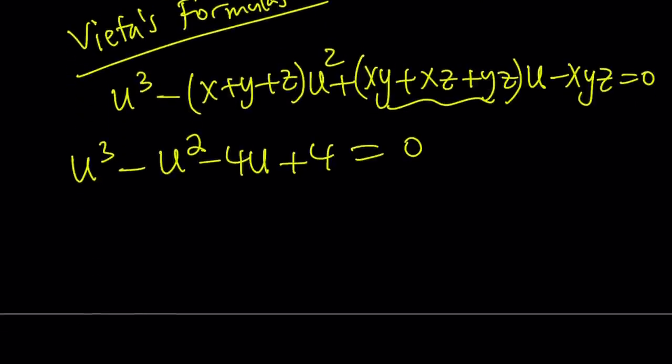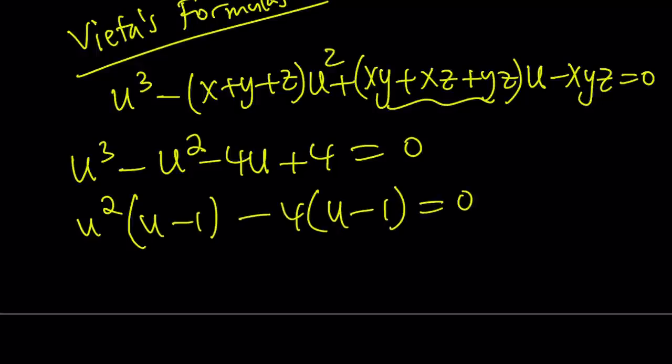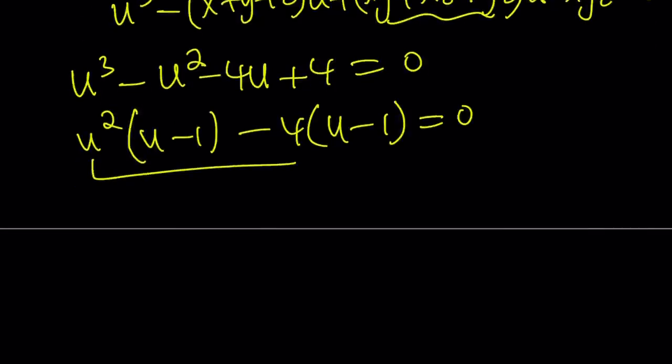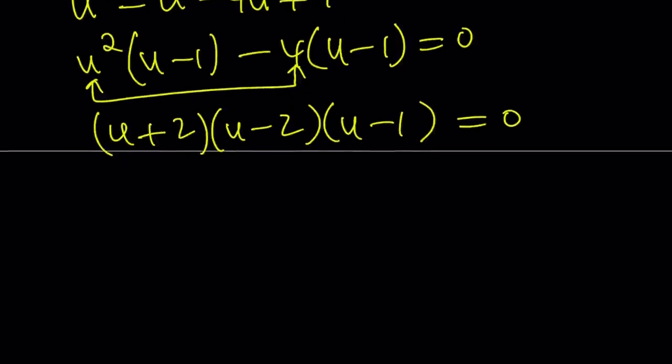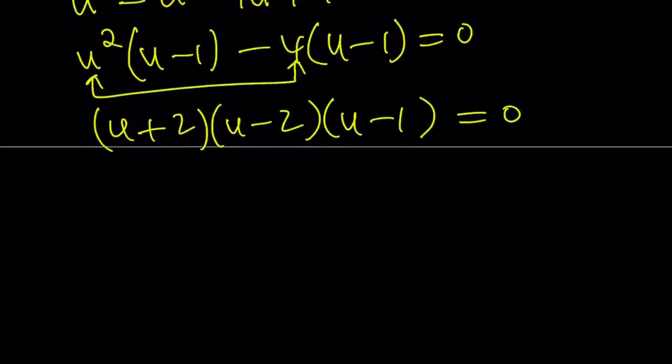Now this is nice because it's factorable. And then from here we can find the values of u. So this gives us u times u squared minus 4. But that's factorable by difference of two squares. So we can write the whole thing as a product of three linear polynomials. And from here we get the three values.